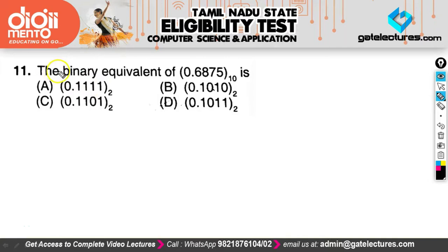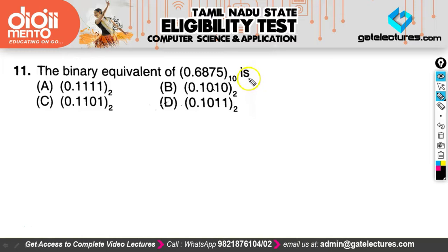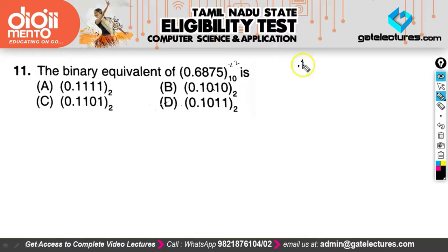The next question asks for the binary equivalent of a decimal fraction. You know the standard way — multiplying by 2 repeatedly to get the digits — but that is quite lengthy. I'm going to tell you a trick that is very easy to follow during an examination. There are 4 binary places here: 0.1, 0.2, 0.3, 0.4.